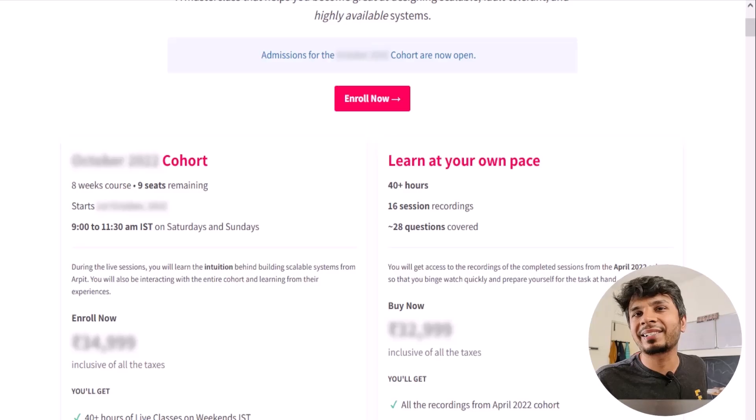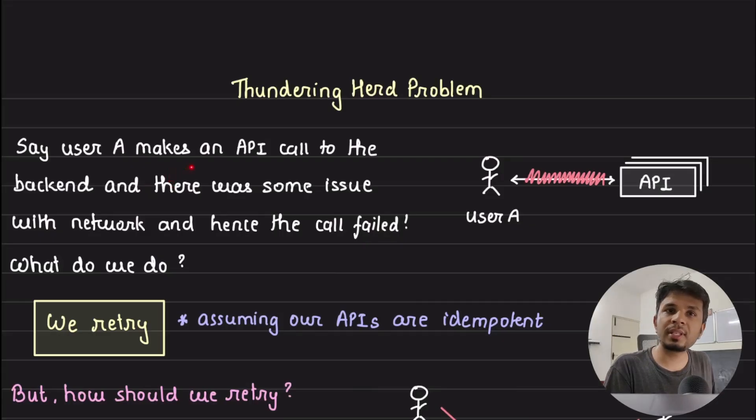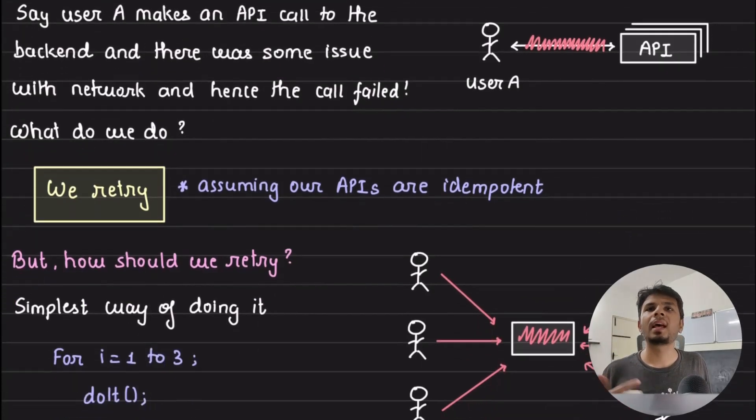So say user A makes an API call to the backend and because of some network issue the API call failed. In such a situation, what do we typically do? We typically retry in order to recover from intermittent failure, so that in case there is a network glitch or some TCP connection broken, and assuming that our APIs are idempotent in nature, we automatically retry the API call until it is successful.